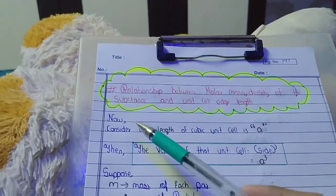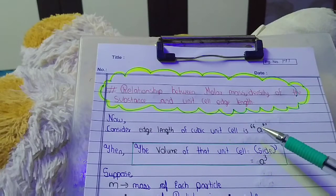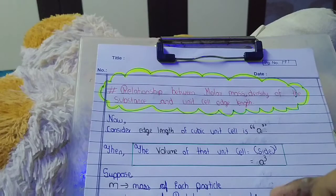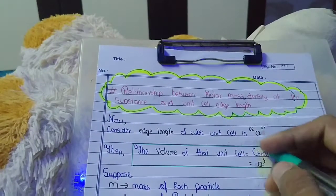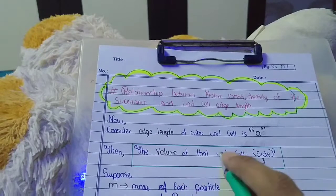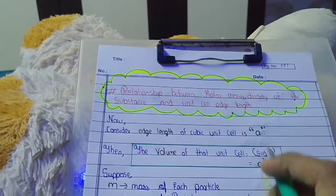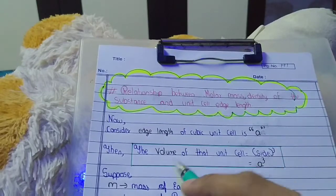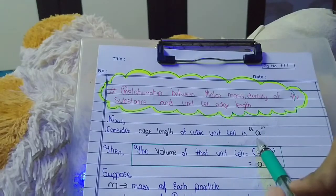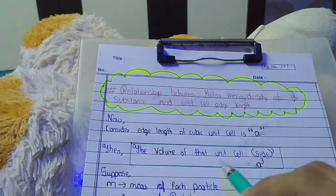First, we consider that the edge length of a cubic unit cell is A — that is, the side of a cubic unit cell is A. The volume of a cube is side cubed, so the volume of the unit cell will be A cubed.